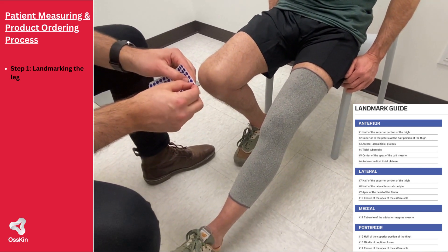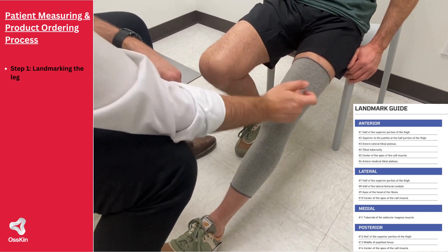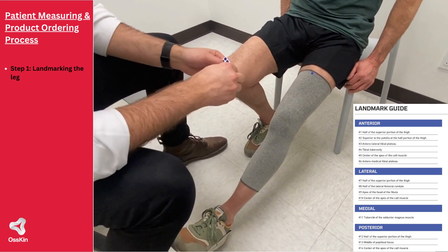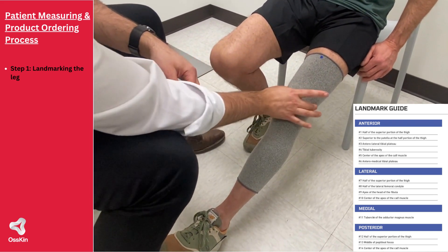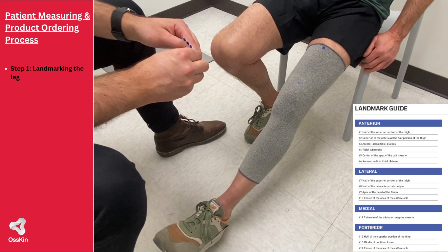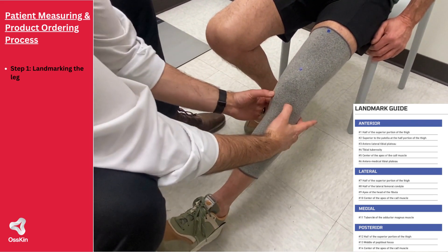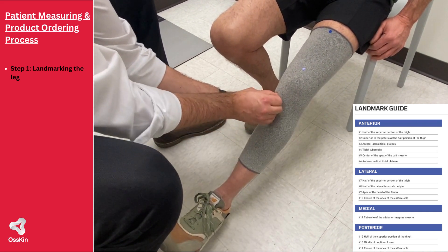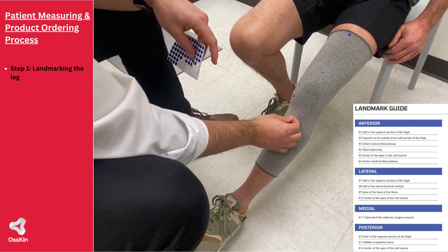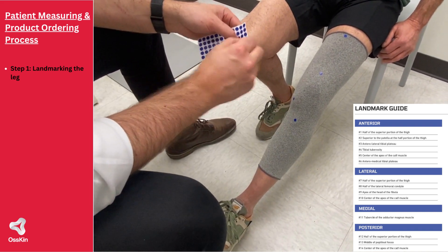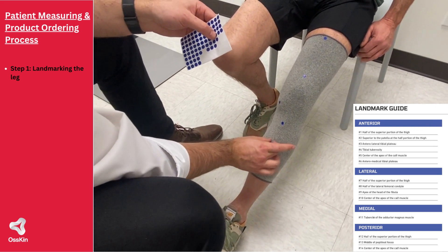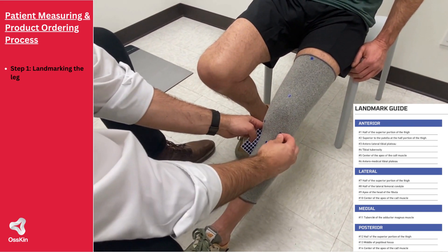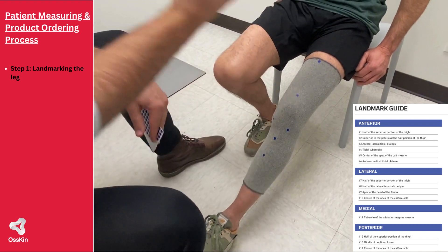At this point we're ready for landmarking our patients. Our first landmark is the superior aspect of the thigh midline. We then want to go just above the patella midline. We then identify our medial tibial plateau, then the anterior tuberosity of the tibia, then we want to find the largest portion of the calf, midline, and then our lateral tibial plateau. Those are our anterior landmarks.